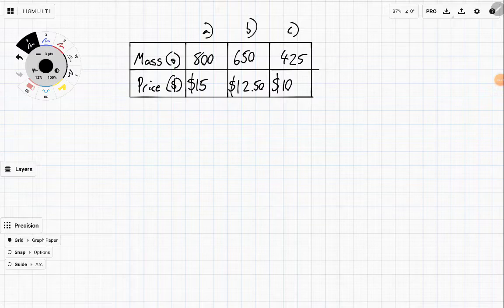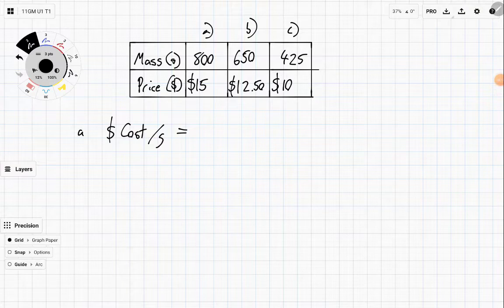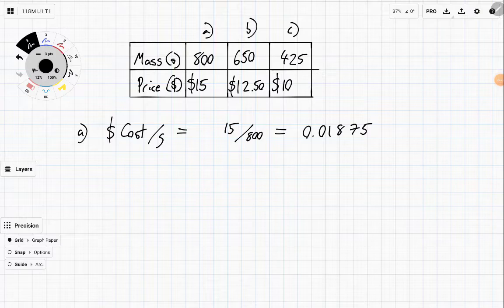So let's try to work out which is the best value. And in this case, we're going to be looking for the cost per gram. In order to work that out, well, we take the cost and we divide it by the number of grams. So for A, it's going to be $15 divided by 800, which is equal to 0.01875. So it's not many dollars per gram.